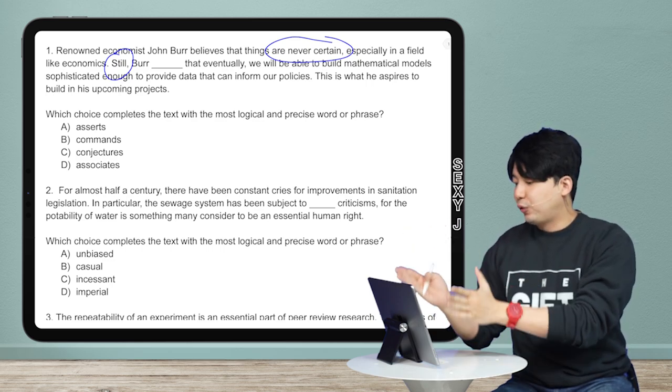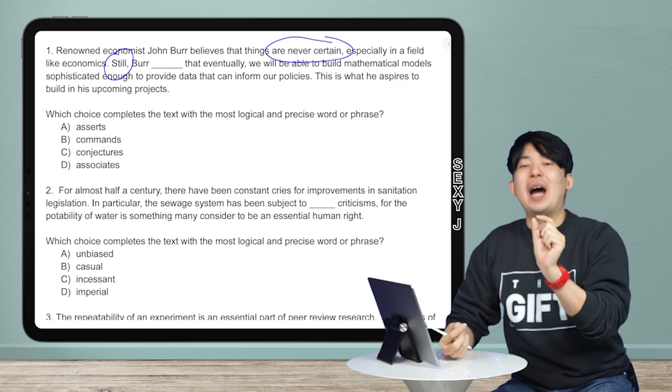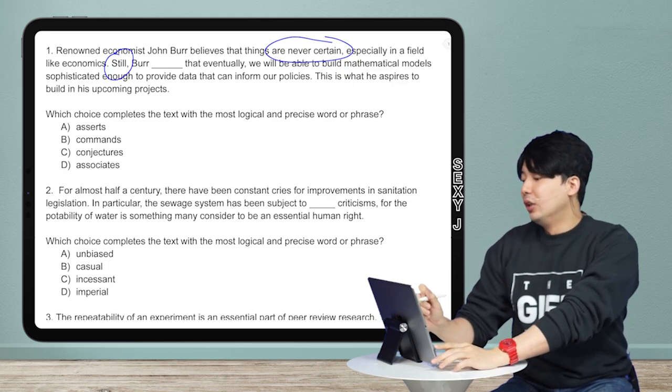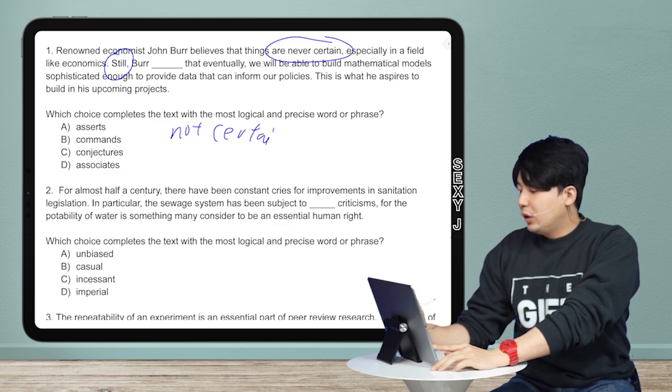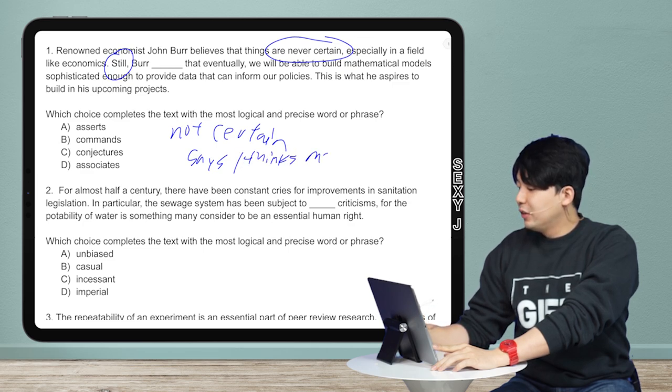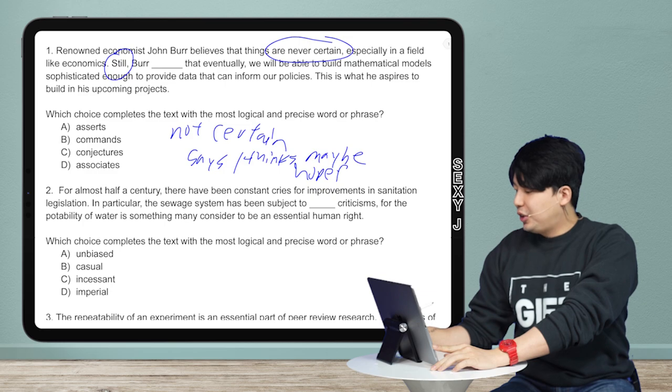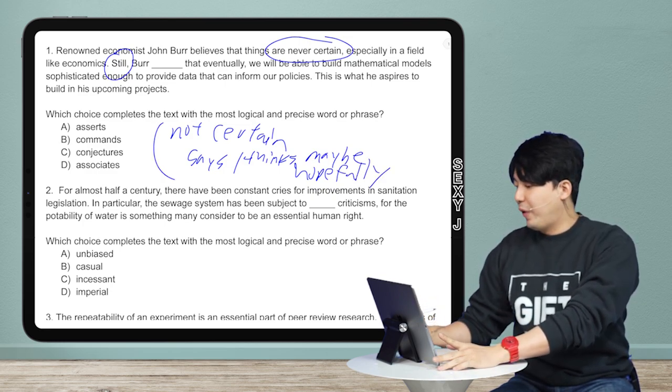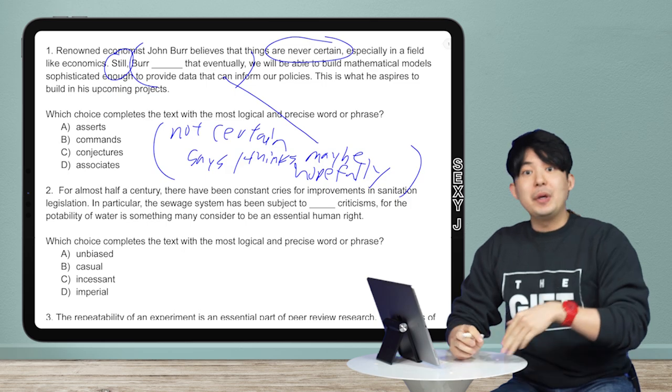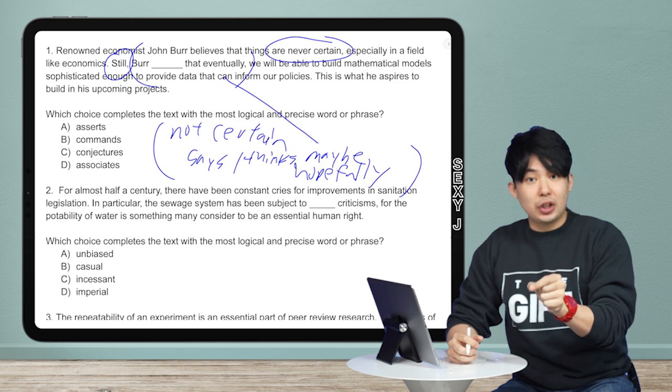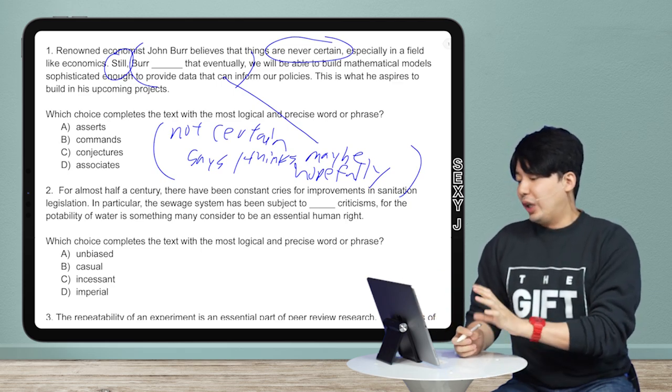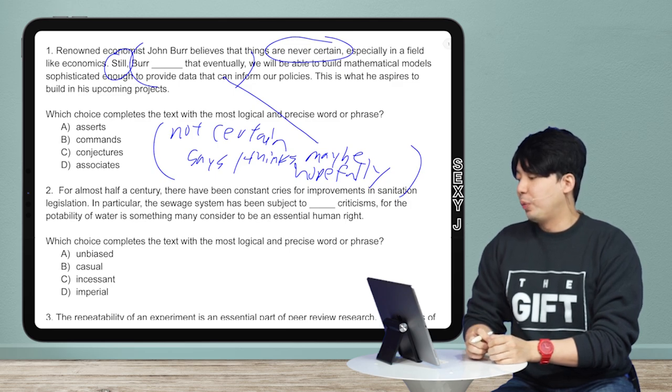I want to just transform. What do I say in every single video, guys? Hi, hey, sexy J. Yeah, I say that, but paraphrase. I say that almost every video. Paraphrase. So, what should this be? So, even though it's not certain, he says or thinks maybe, hopefully. You see, I'm not being very professional with this type of paraphrase of what should go here. Why? Because I want this to be easy for you guys and I want it to be natural, okay? Because if I try to make it sound professional, a lot of times people get stuck on the wording from the text, okay? So, the actual text was still blank that eventually we will be able to build mathematical models sophisticated enough to provide data that can inform our policies. I don't care about any of those details, right?